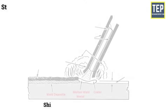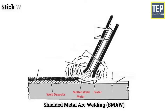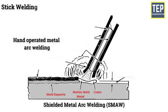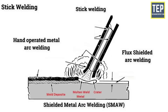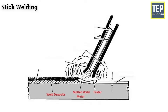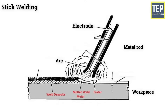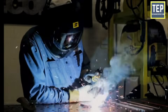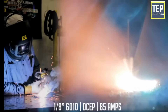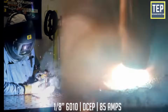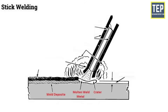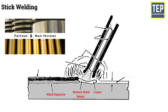Stick welding, also known as shielded metal arc welding, is also identified as hand-operated metal arc welding, flux shielded arc welding, or stick welding. In this type of welding process, the arc is struck between the metal rod or electrode and the workpiece, with the surface of both the rod and the workpiece melting to create a weld pool. The simultaneous melting of the flux coating on the rod will produce gas and slag, which shields the weld joint from the environment. Shielded metal arc welding is ideal for joining ferrous and non-ferrous materials with various thicknesses at all positions.